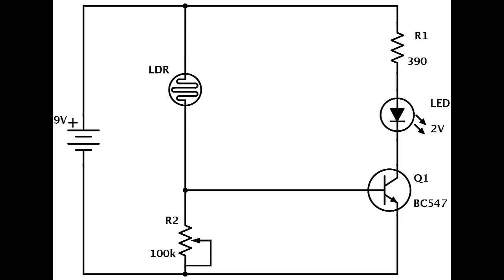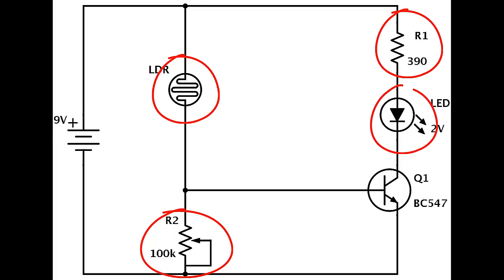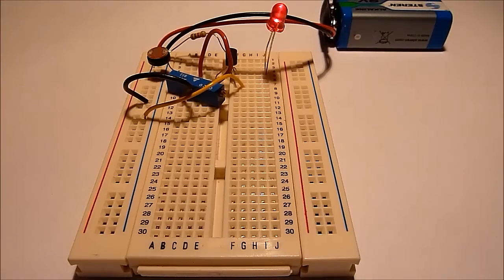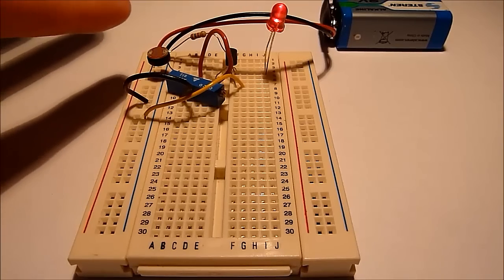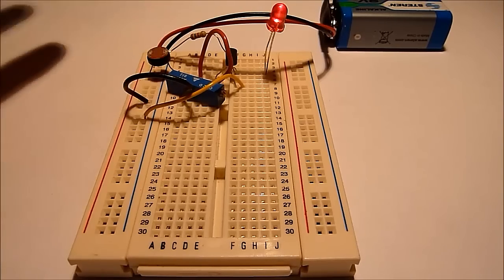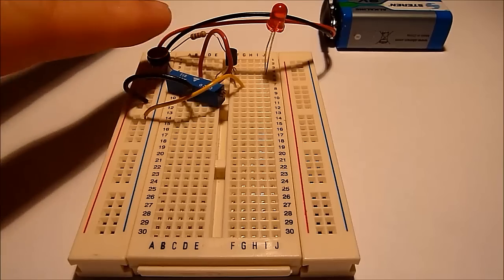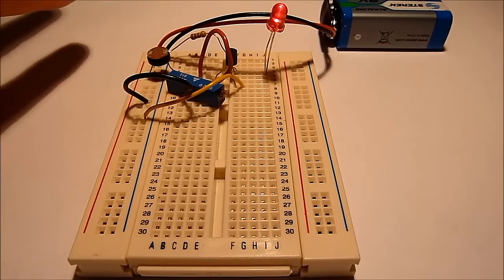For example, here I can get an LDR, a potentiometer, a resistor, an LED, and a transistor. Then I can put these components together on a breadboard like this. And I would then have a circuit that has the specific function that this diagram was made for, without necessarily understanding why it works.